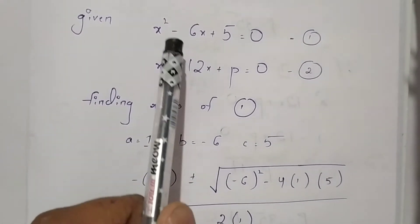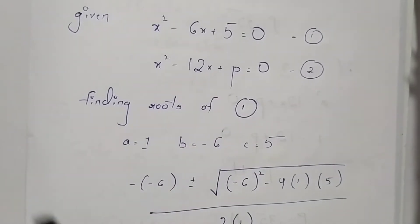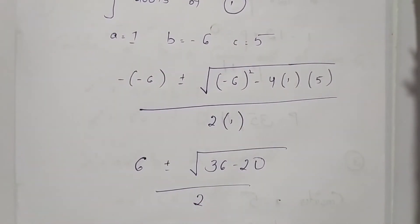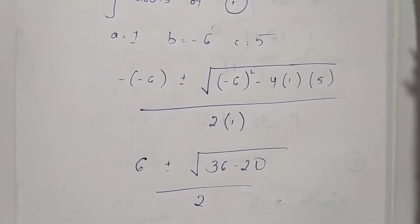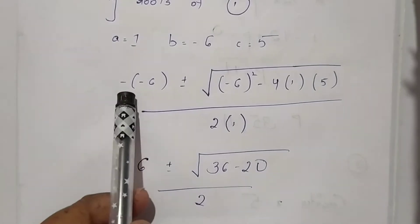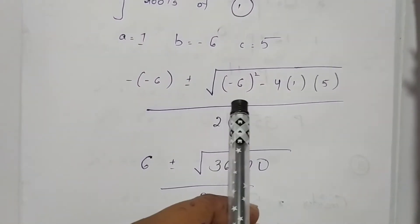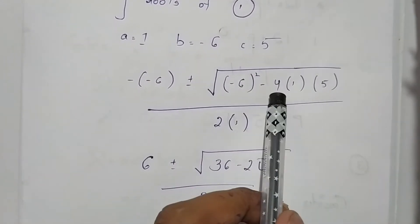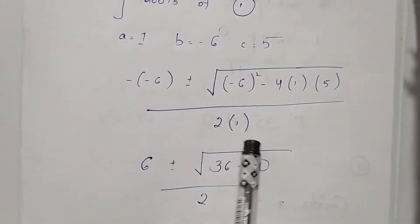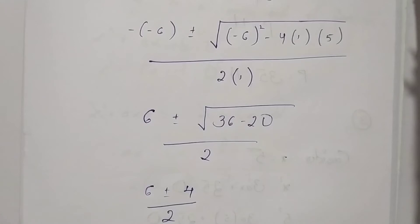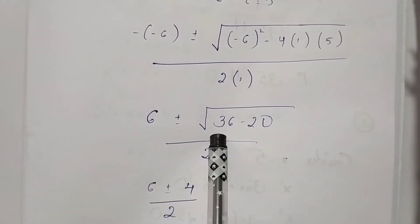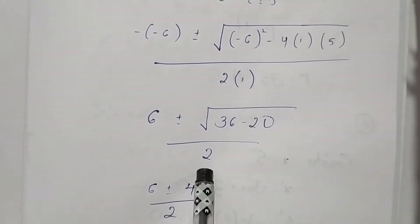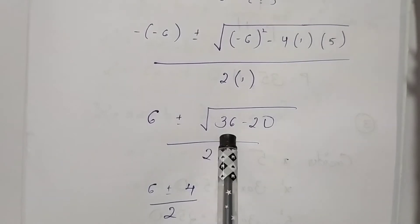From this equation we get a = 1, b = -6, and c = 5. Substituting into the quadratic formula: minus b plus or minus square root of b squared minus 4ac divided by 2a, we get minus of minus 6, plus or minus square root of (-6) squared minus 4 into 1 into 5, divided by 2 into 1.